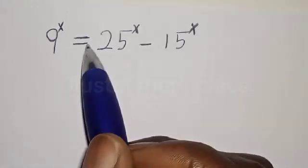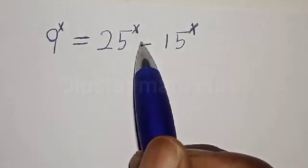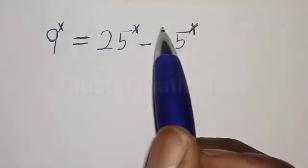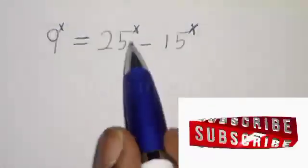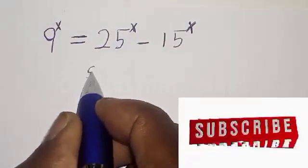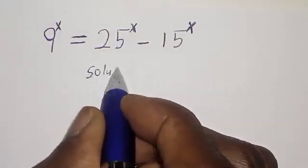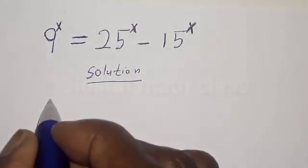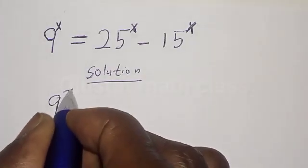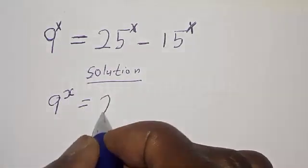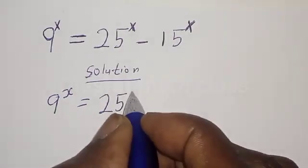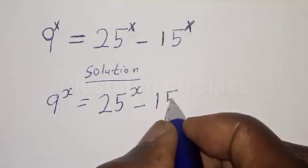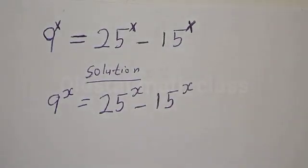The given equation is 9 raised to power s is equal to 25 raised to power s minus 15 raised to power x. Before we proceed, please don't forget to like, share, comment and subscribe. Thank you. Solution: we have the given equation 9 raised to power s is equal to 25 raised to power s minus 15 raised to power x.